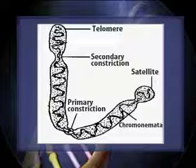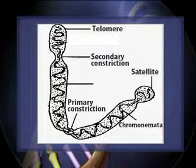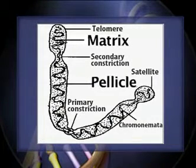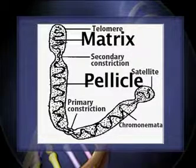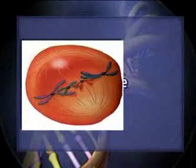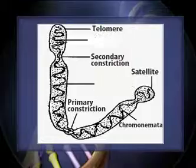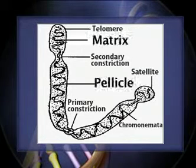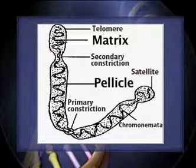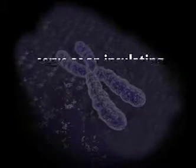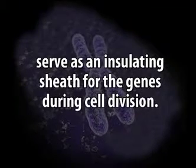First, the pellicle and matrix. Each chromosome is apparently bounded by a thin membrane called the pellicle, which encloses a jelly-like substance called matrix. Both the pellicle and matrix are composed of achromatic or non-genetic material and appear only at metaphase when the nucleolus disappears. The true structure and function of pellicle and matrix are not known because they are not stainable with dyes. Most probably the matrix aids in keeping the chromosomes within bounds and may also serve as an insulating sheath for the genes during cell division.